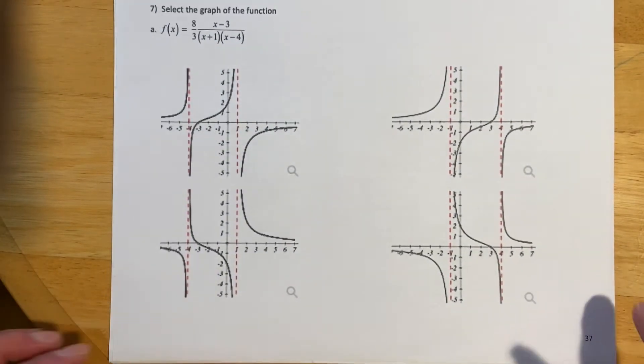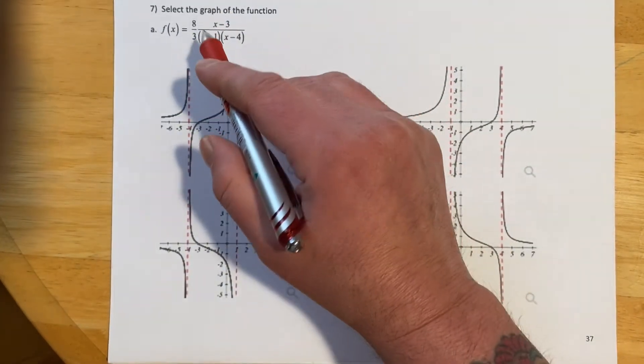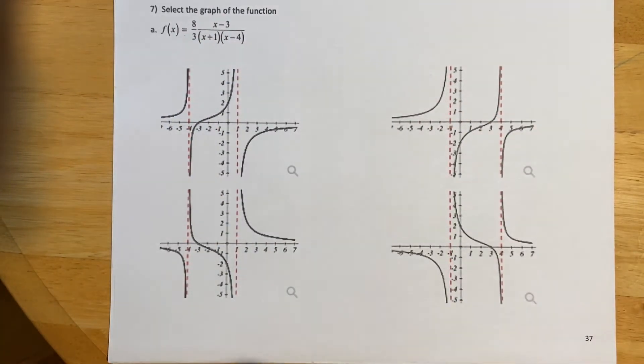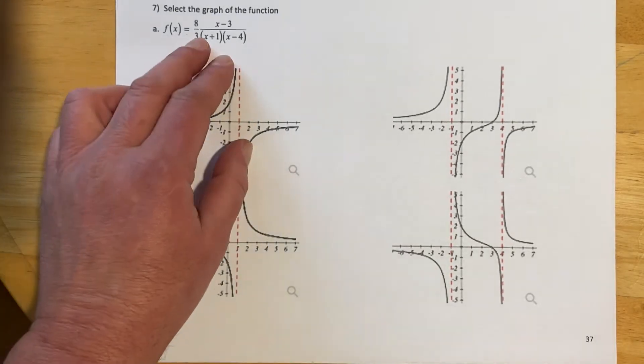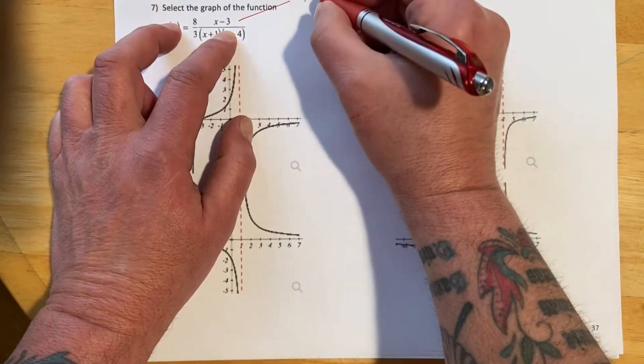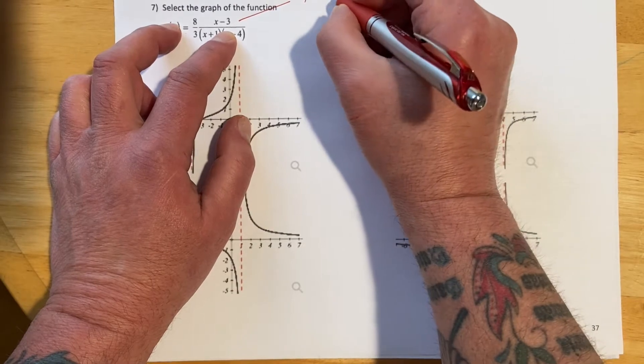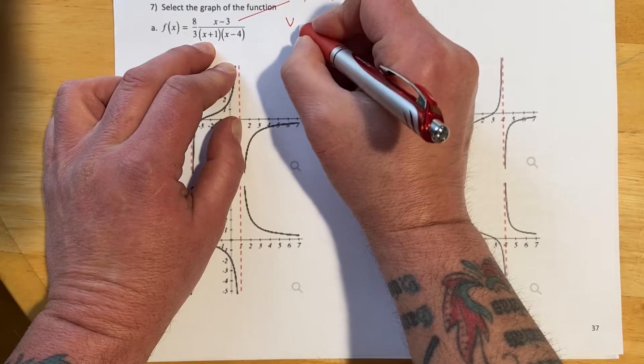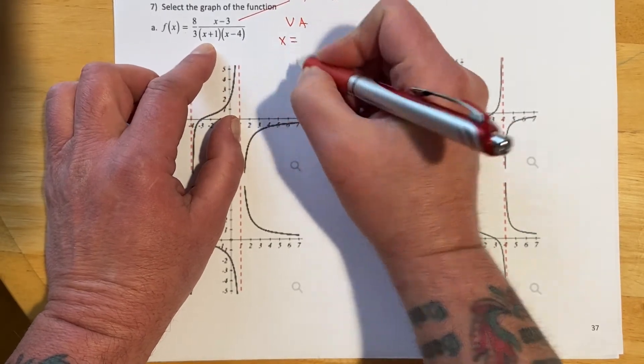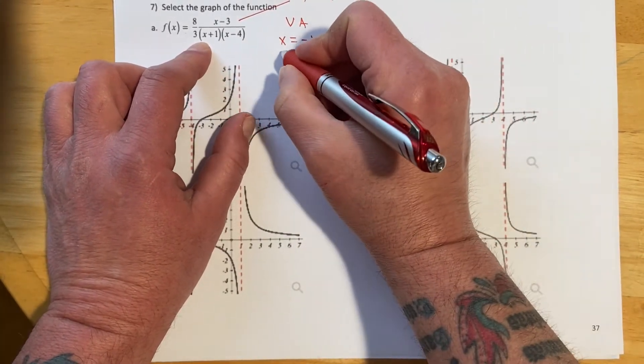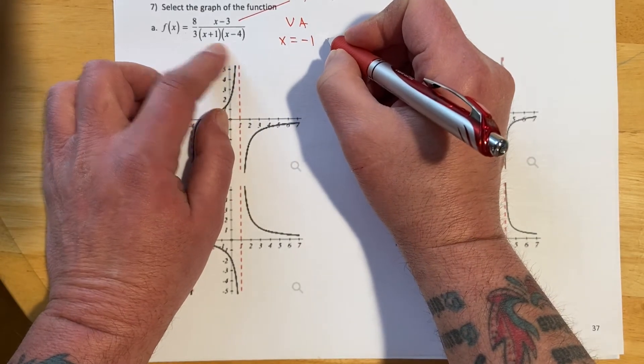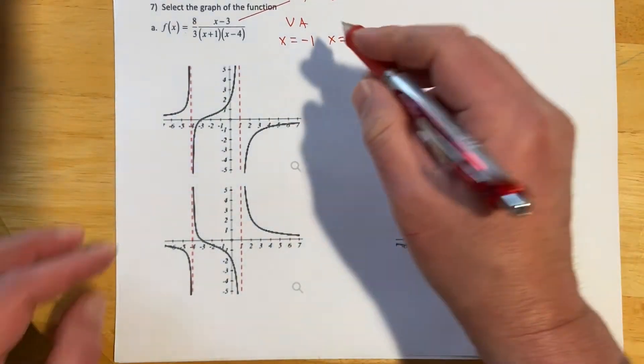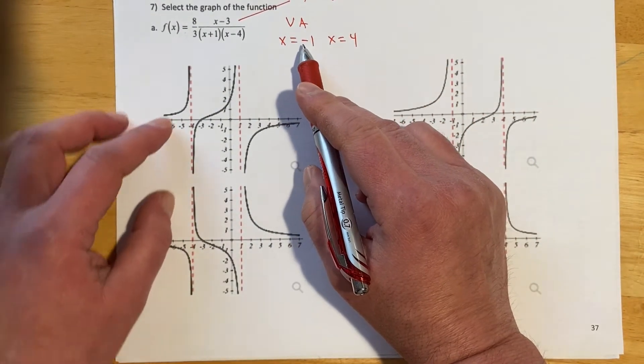So let me show you a couple of matching problems. So looking at this, we're given this equation and then four graphs to figure out which one it is. So from the numerator I know I'm going to have an X-intercept at X equals 3. And then from the denominator I know I'm going to have vertical asymptotes at X equals negative 1 and X equals 4.